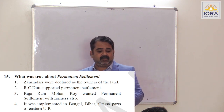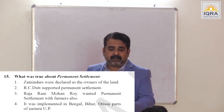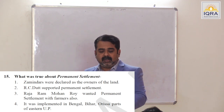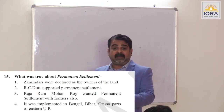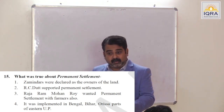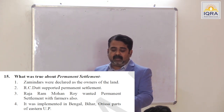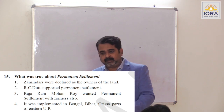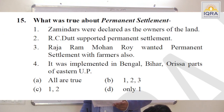Aristocrats supported permanent settlement — true. Raja Ram Mohan Roy wanted permanent settlement with farmers also — true. It was implemented in Bengal, Bihar, Orissa, and parts of Eastern UP — true. Answer is A. Permanent settlement was a very important move of Cornwallis because the company was passing through consolidation and required a stable source of income.